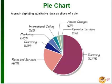A pie chart — this is the same data as the Pareto chart. You can see right away that 'slamming' was the biggest category.